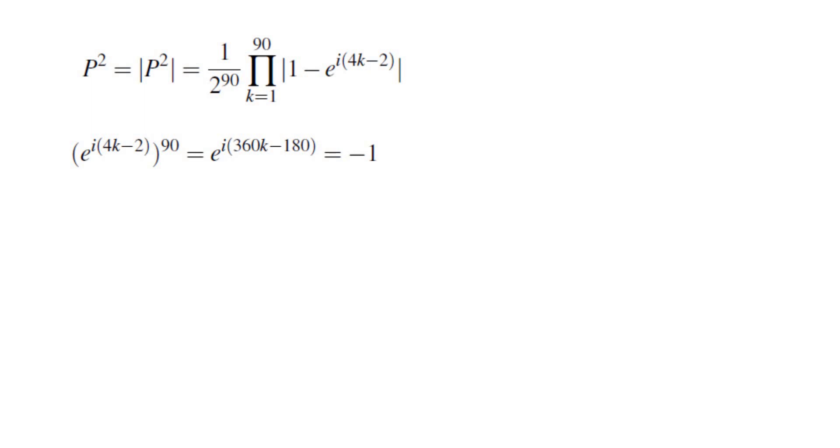Now we have 90 complex numbers e^(i(4k-2)) where k ranges from 1 to 90. If you raise each one of them to the 90th power, with a similar argument, this equals -1.